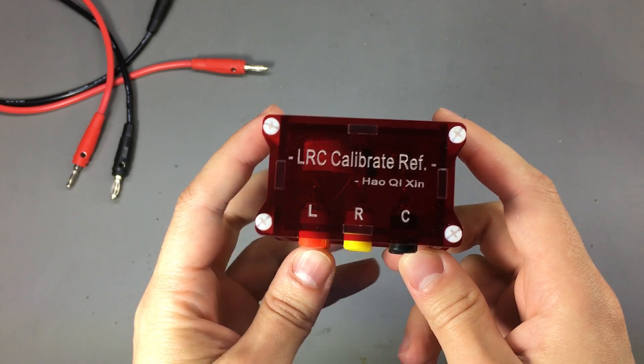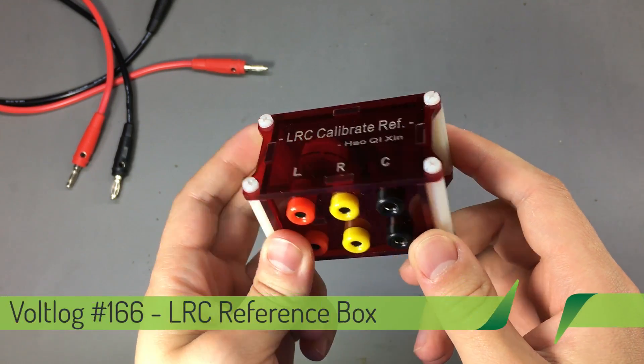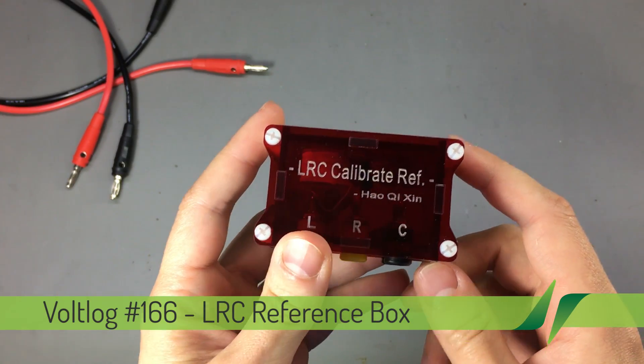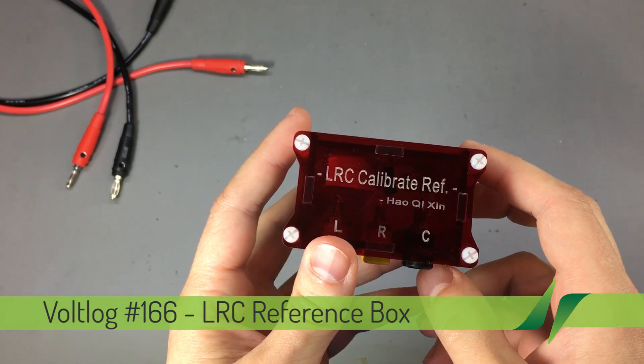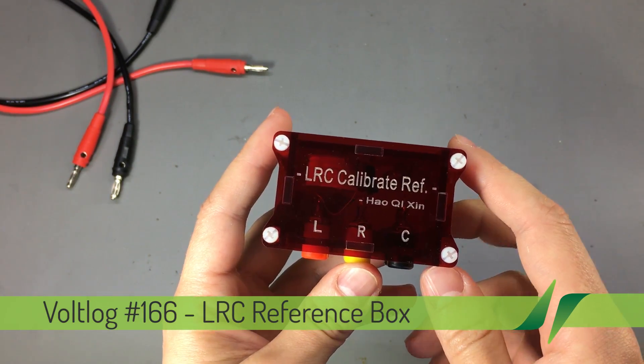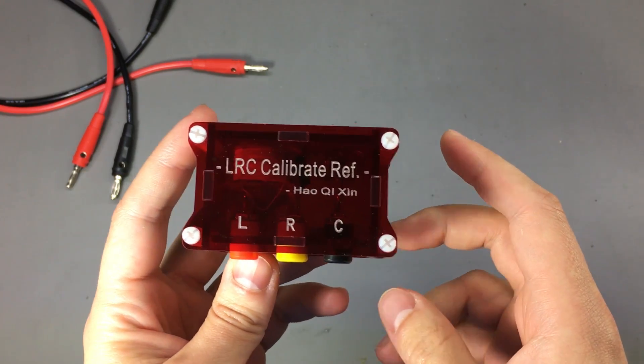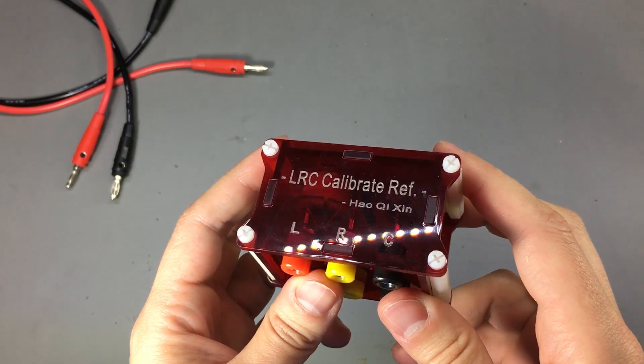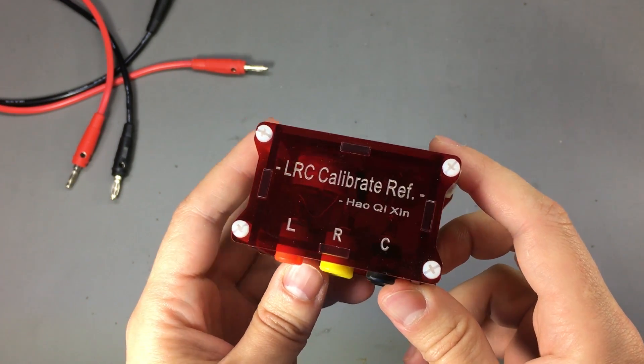Welcome to a new vlog. Today we're taking a look at this LRC reference box that I got from China. It can be found on eBay and AliExpress for about $17, and you'll find links in the description below.